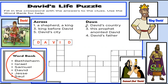Two down: David's country. Well, it has to begin with an I. And if we take a look at the word bank, Israel begins with an I. So two down is Israel. Okay, we can cross that one out.